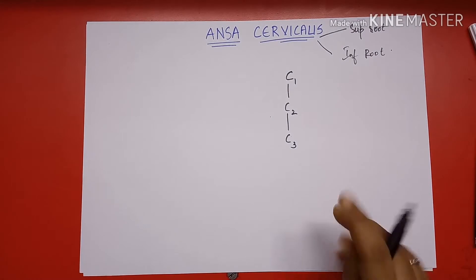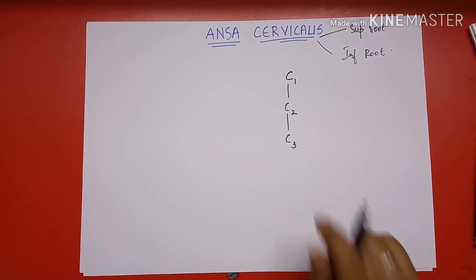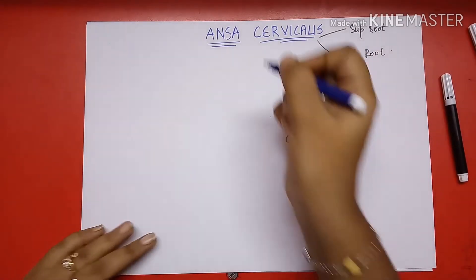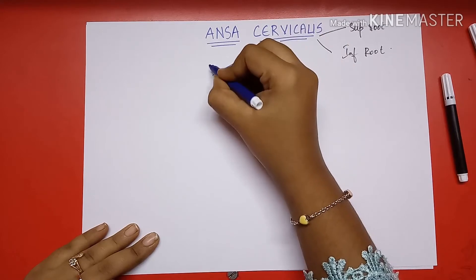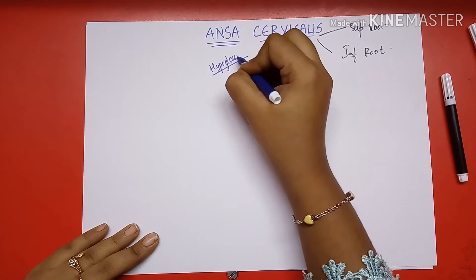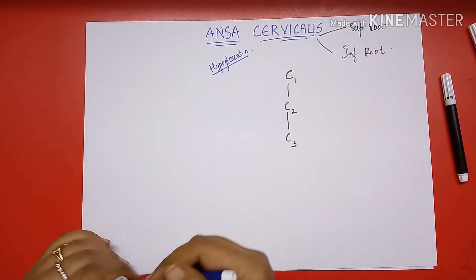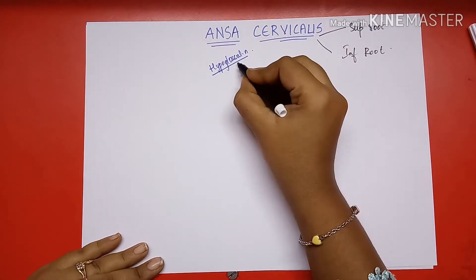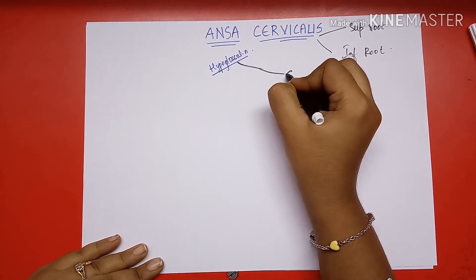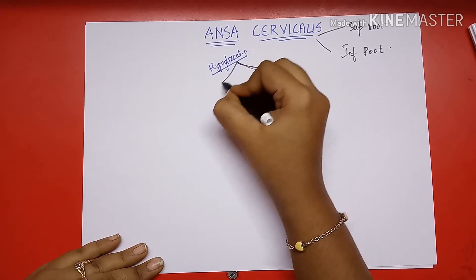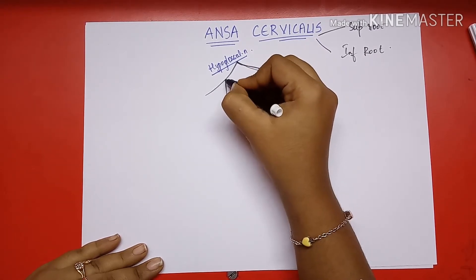First, we learn about the formation of the superior root. The superior root is formed by a separate branch arising from C1. Now, the hypoglossal nerve is here — a branch from C1 joins the hypoglossal nerve, and the descending branch of the hypoglossal nerve forms the superior root.